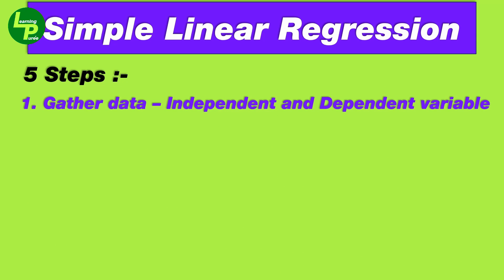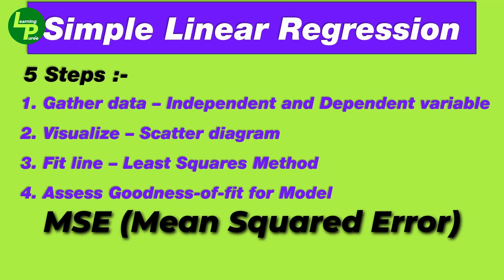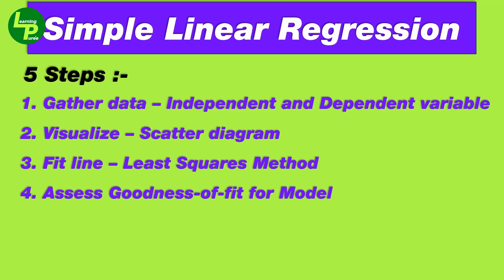Step 1 involves gathering the data for both the independent and dependent variables. Step 2 entails visualizing the data using scatter plots to understand the relationship. Step 3 is where we fit a line to our data points using the least squares method. Step 4 is all about assessing the model's goodness of fit using metrics like R-squared, mean squared error, and p-values. And finally, in step 5, we can utilize our model to make predictions or analyze various scenarios.